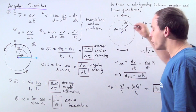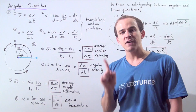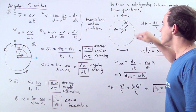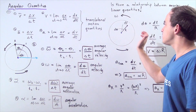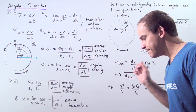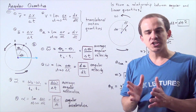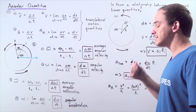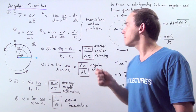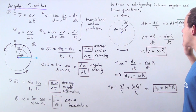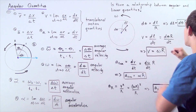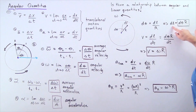Suppose this point moves an infinitely small amount given by DL. The angle created by this rotation is given by D theta. Recall the relationship between angle theta, radius R, and arc length L: theta equals L divided by R. That means D theta equals DL divided by R, and bringing R to the left side gives us DL equals D theta multiplied by R.